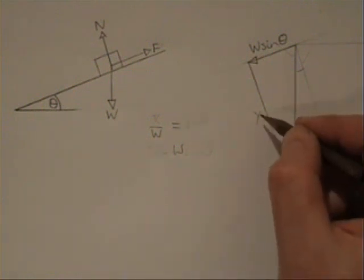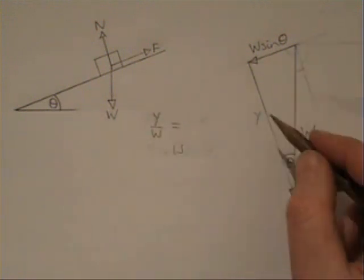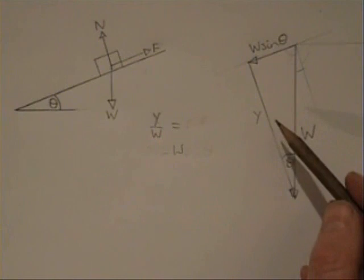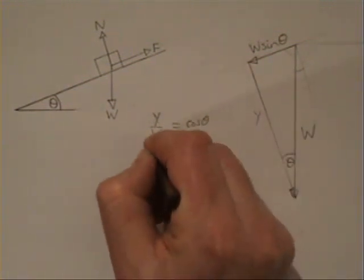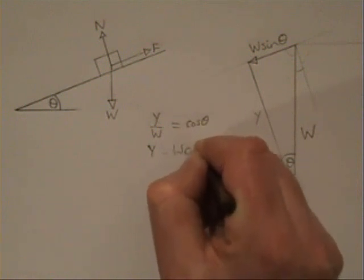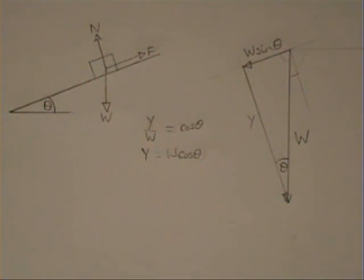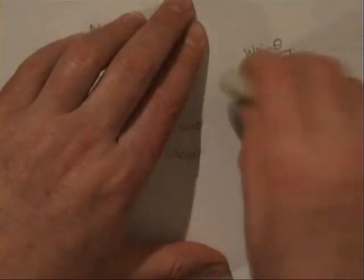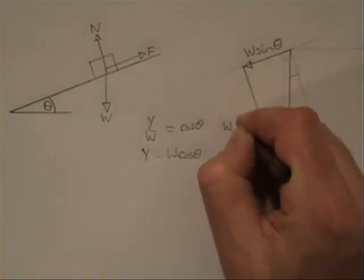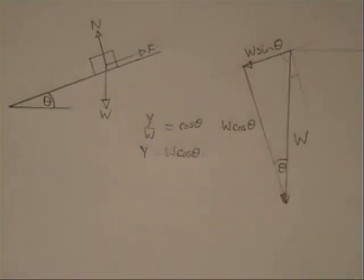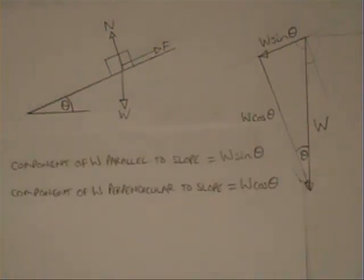Similarly for the other side y: y divided by W is adjacent over hypotenuse, which is cosine theta. That means y equals W cos theta. So we replace y with W cos theta. We get the important result: the component of W parallel to the slope equals W sin theta, and the component of W perpendicular to the slope equals W cos theta.